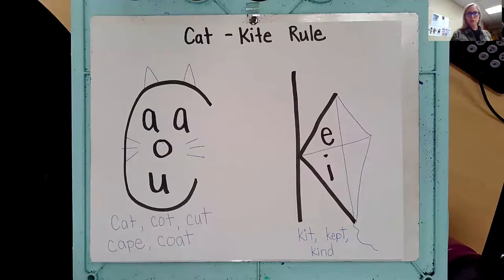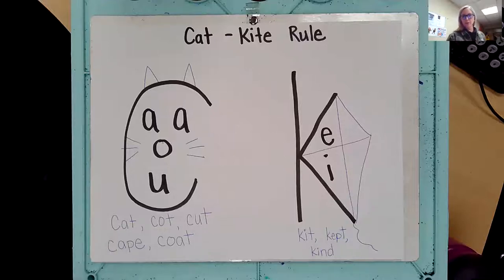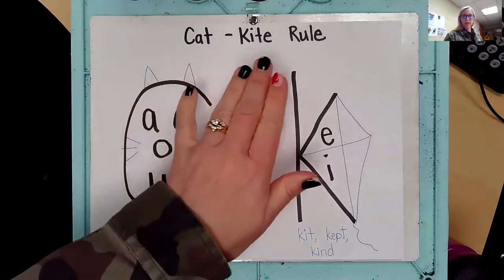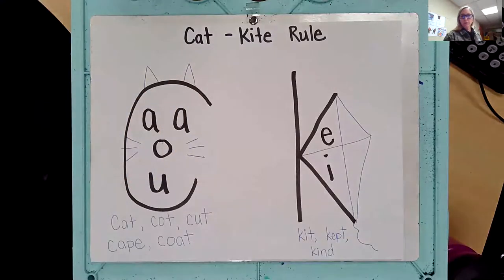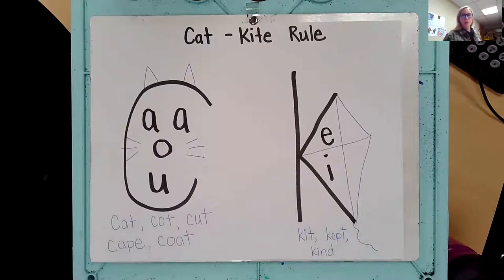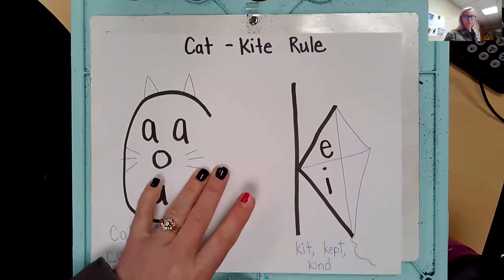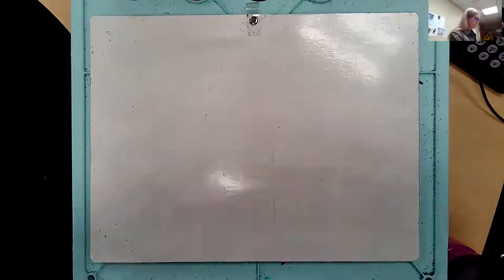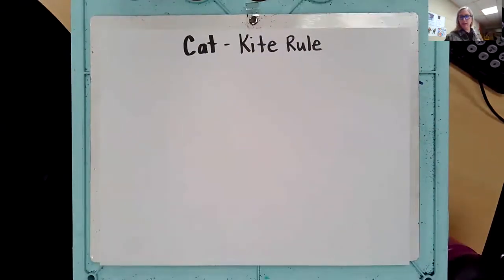Okay friends, so today we learned a new spelling rule. I do want you to grab a piece of paper because I want you to write this spelling rule down at home as well. So we talked about the cat kite rule today, and often we get the question: how do I know if, at the beginning of a word, if I hear the k sound, if it's a c or a k? Well, this is our rule and this is how we're going to learn it. It's called the cat kite rule. So grab your paper and step through with me and make a copy of the cat kite rule.